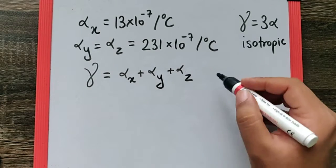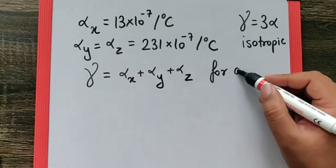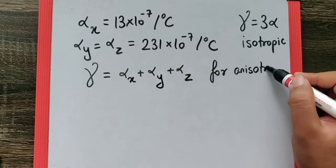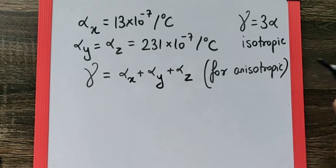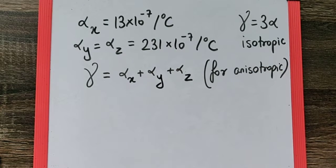But for anisotropic, this is the formula we need to use. Remember, isotropic expansion means expansion uniformly in all dimensions, and anisotropic expansion means different expansion in different dimensions.